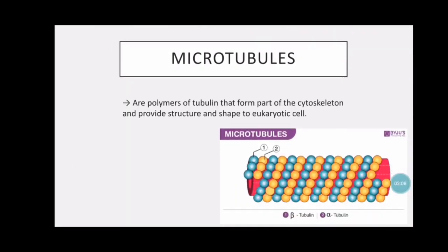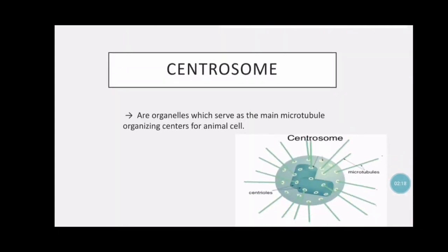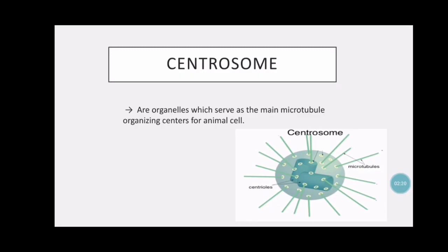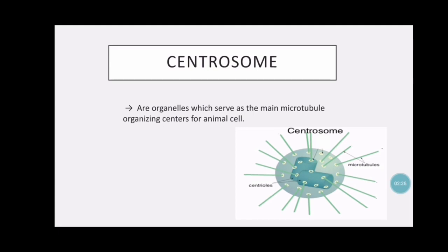Microtubules are polymers of tubulin that form part of the cytoskeleton and provide structure and shape to eukaryotic cells. Centrosomes are organelles which serve as the main microtubule organizing center for animal cells.